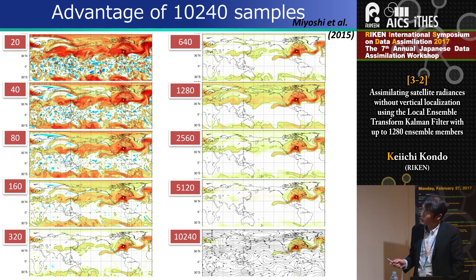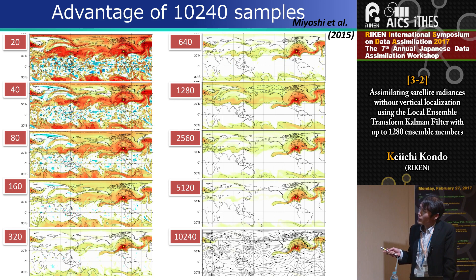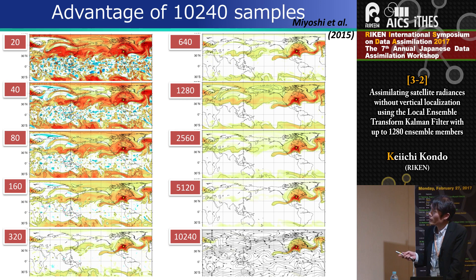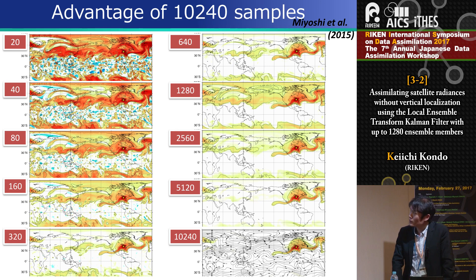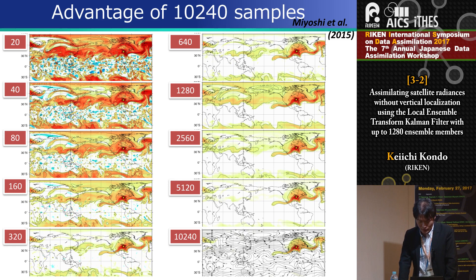This is a result showing the correlation for temperature from a yellow star grid point. With 20 ensemble members, the experiment has large sampling noise over the world. As ensemble size increases, the sampling error is reduced, and with 10,000 ensemble members the sampling noise is greatly reduced in the correlation structure. This correlation structure has a flow-dependent structure.